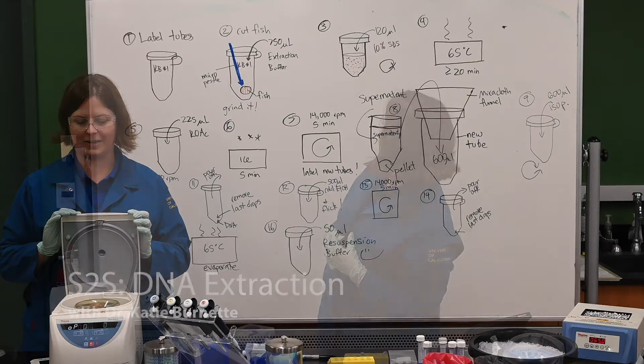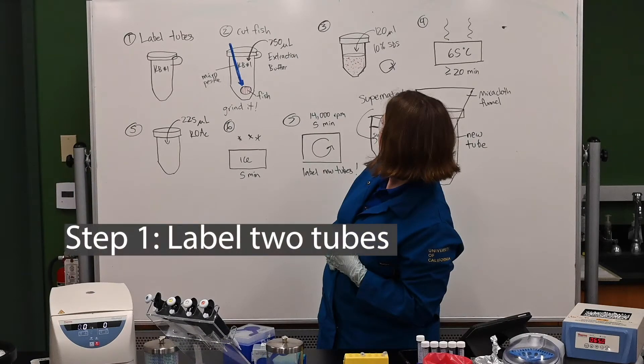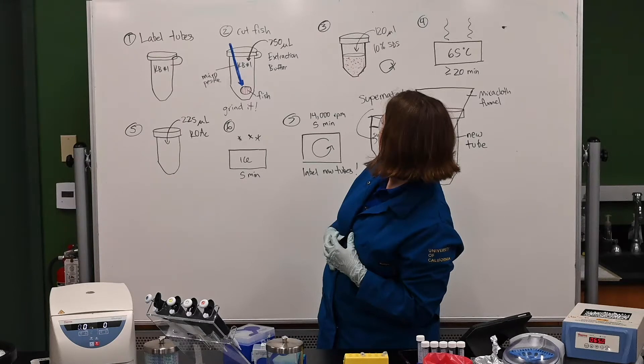Hi folks, it's Dr. Katie Burnett here. Today we're going to talk about how to get DNA out of fish. Step one, label two tubes. Make sure you put your initials and the number of the fish.